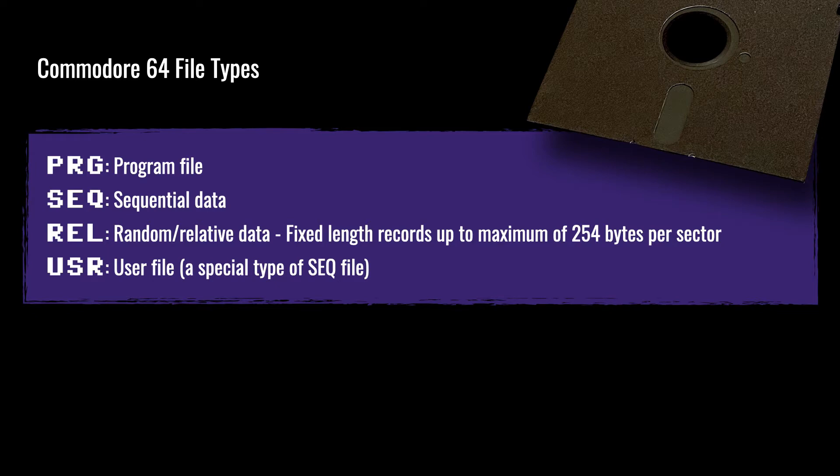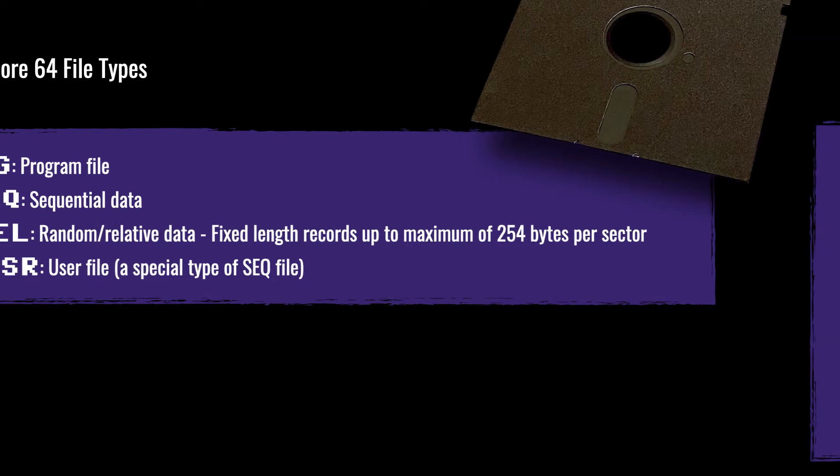With a sequential file, you cannot jump deep into the data for the part that you actually need. The next is a relative data file, or random access file — as the name suggests, you can access individual records by number without having to read every other record before it. So if you want record number 99, you don't have to read records 1 to 98 to get to it, and the maximum size of a record is 254 bytes per sector. The last is the rarely used user file, which is basically a sequential file of unknown format.